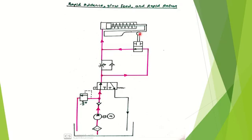When the cam comes in contact with the roller of the 2/2 direction control valve, it blocks the fluid through that path. The fluid is then forced to pass through the flow control valve, which allows only a restricted flow. Because of this restricted flow, the piston speed is reduced. From the 50% position to the next 50% position, there is low speed — the slow feed phase. When the piston reaches the extreme position, the fluid supply is stopped and the piston returns in the reverse direction at fast speed — the rapid return. This completes the rapid advance, slow feed, and rapid return circuit.